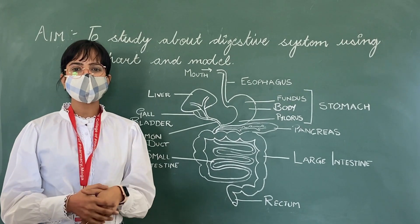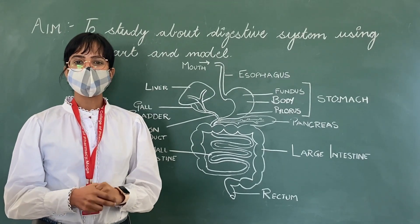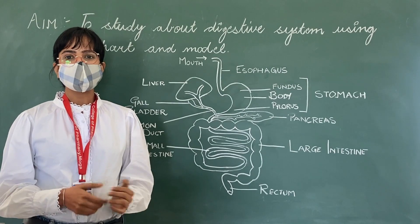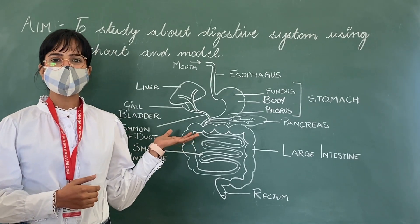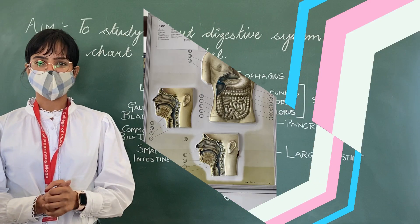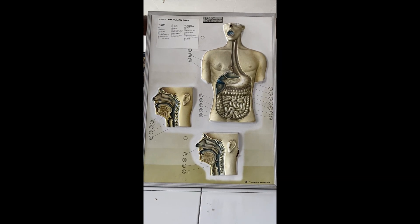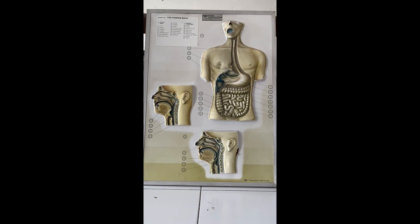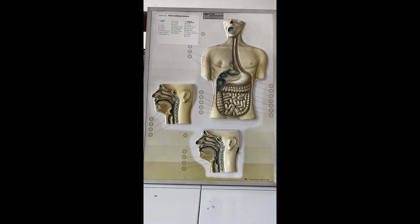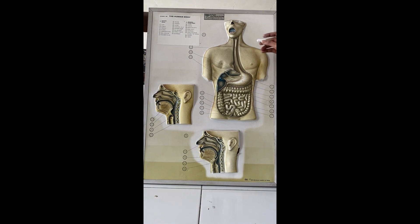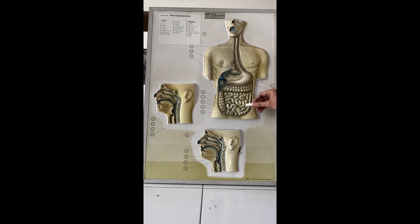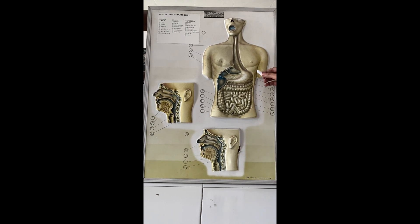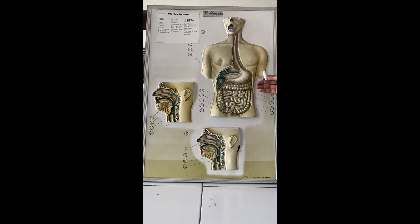The digestive system is classified into two parts: the alimentary canal and accessory organs. The alimentary canal is a long continuous tube which starts from the mouth and continues till the rectum. The accessory organs are not in direct contact with food but they help in digestion.